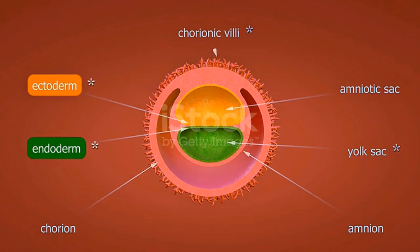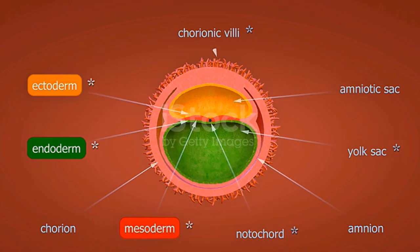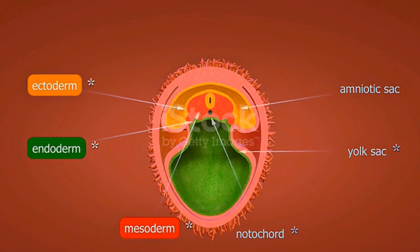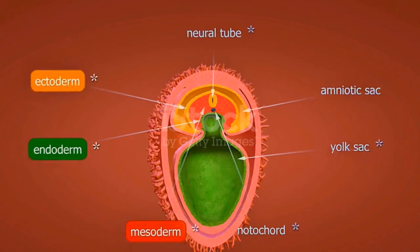The embryo is surrounded by the amniotic sac — a fluid-filled bag that acts like a shock absorber. It also protects the baby and keeps the baby warm.